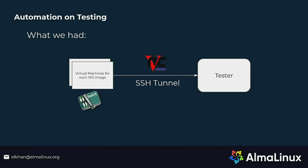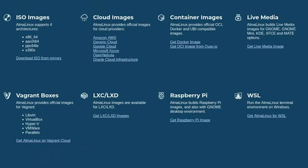So, what we had: when we maintained a single major version with a couple of architectures, the level of automation covered a provisional testing system, so testers would use a checklist to test the system. After support for more architectures grew and we introduced a new major version — AlmaLinux 9 — we sought ways to increase automation in testing.